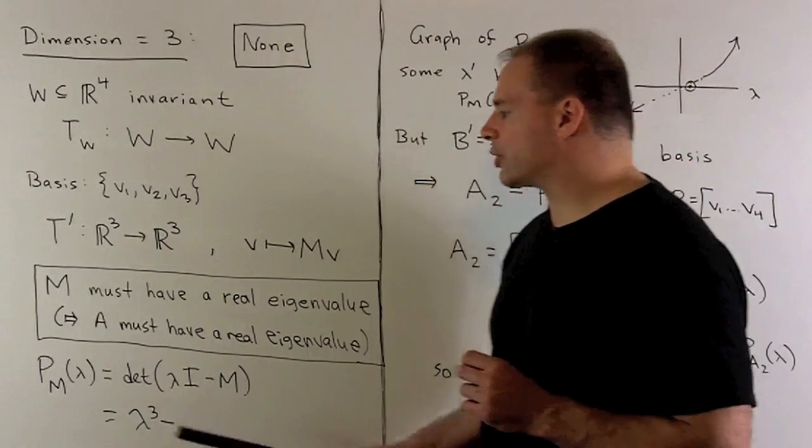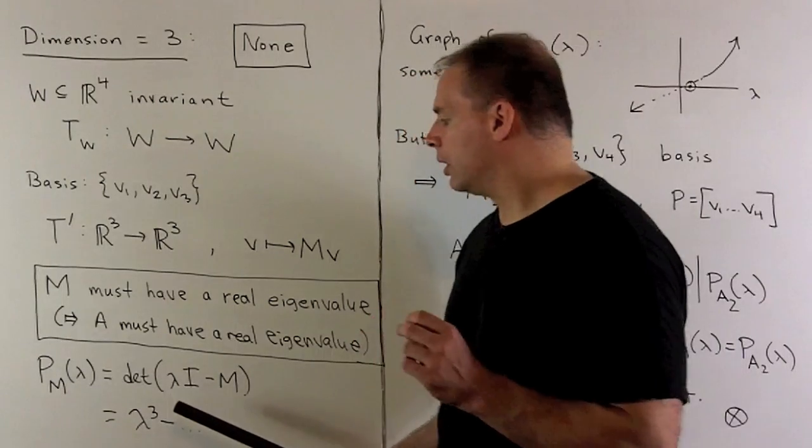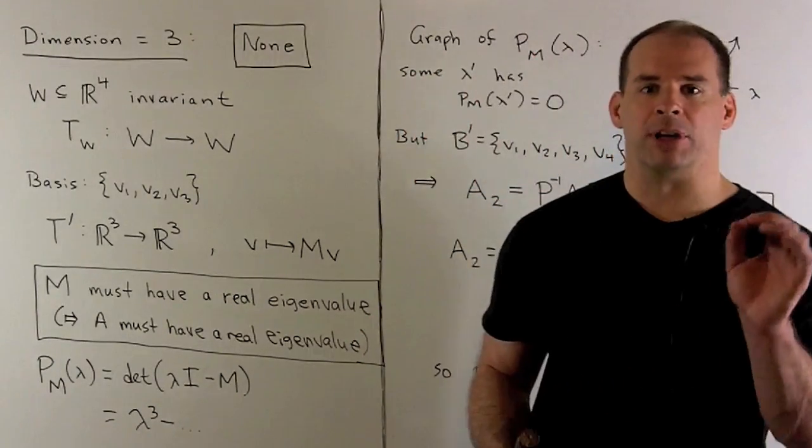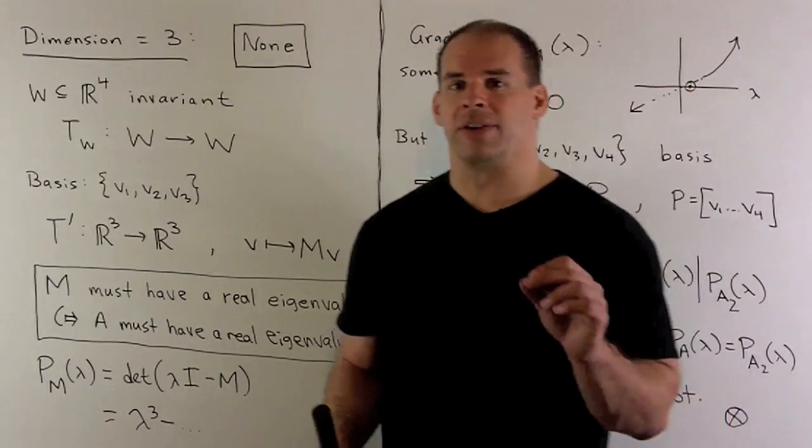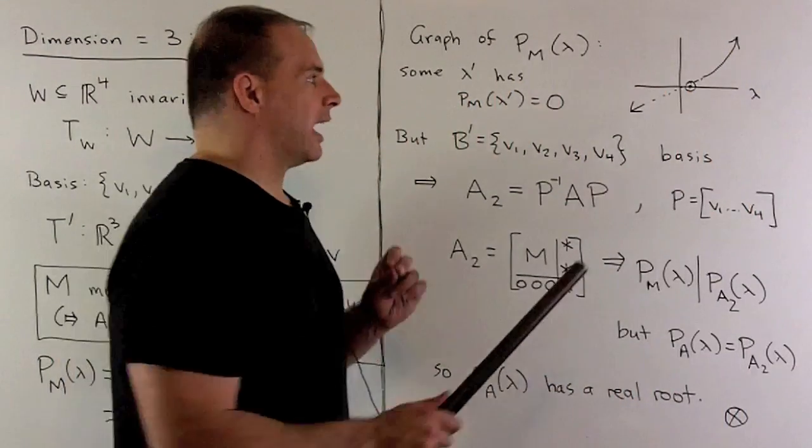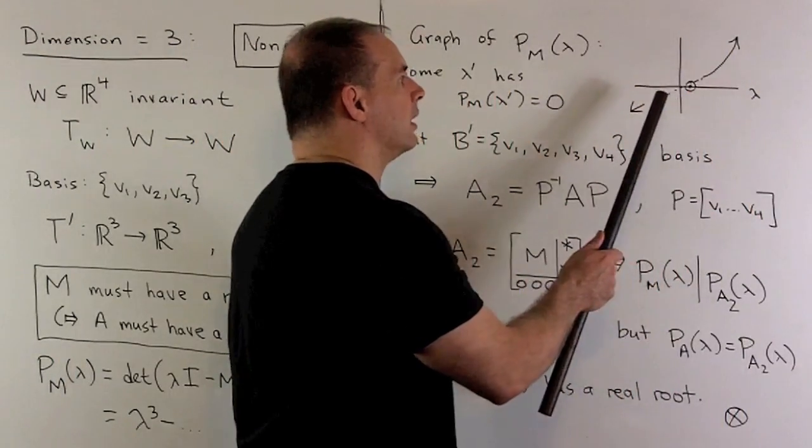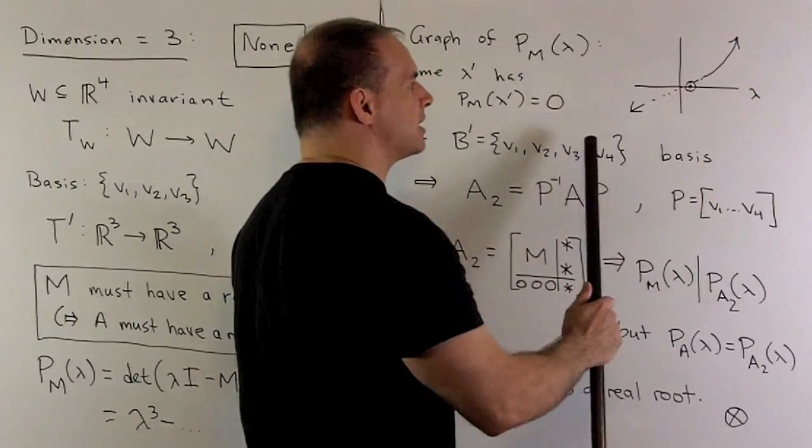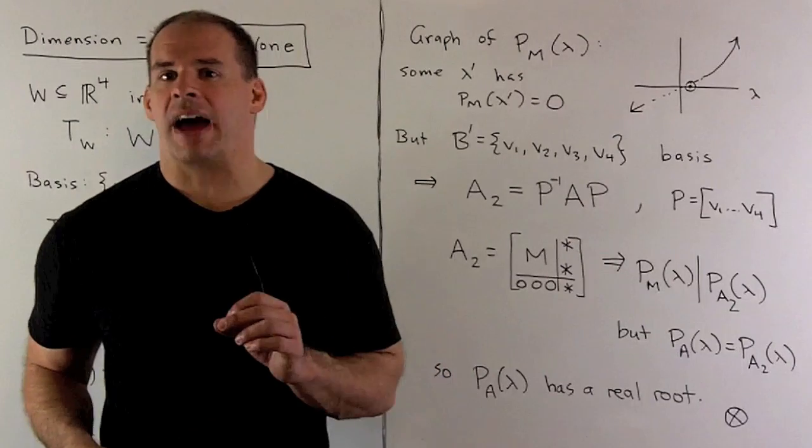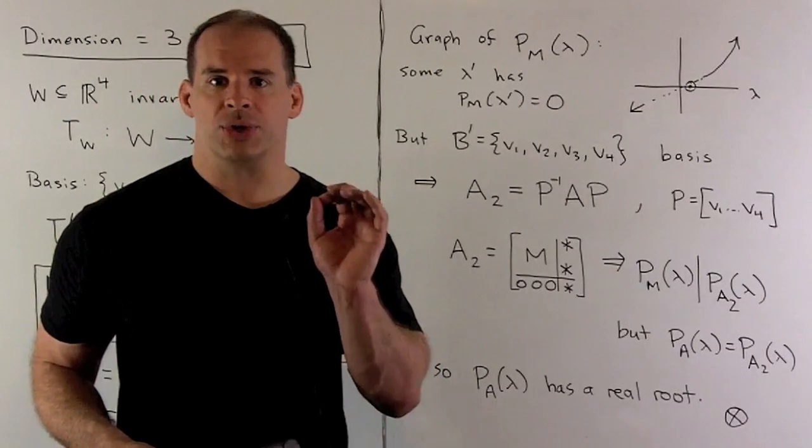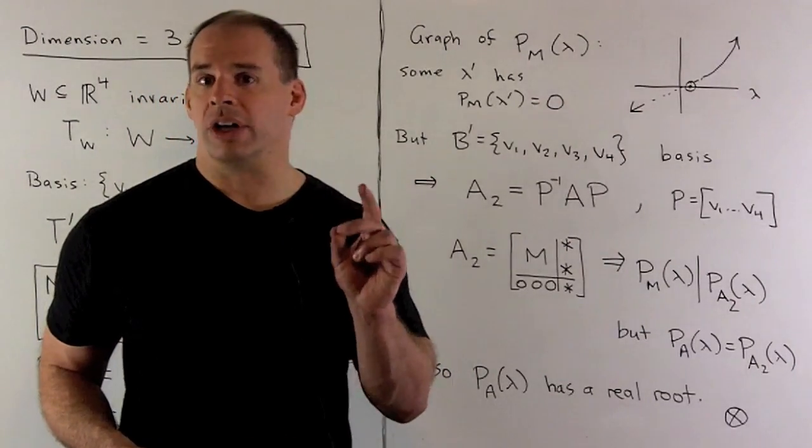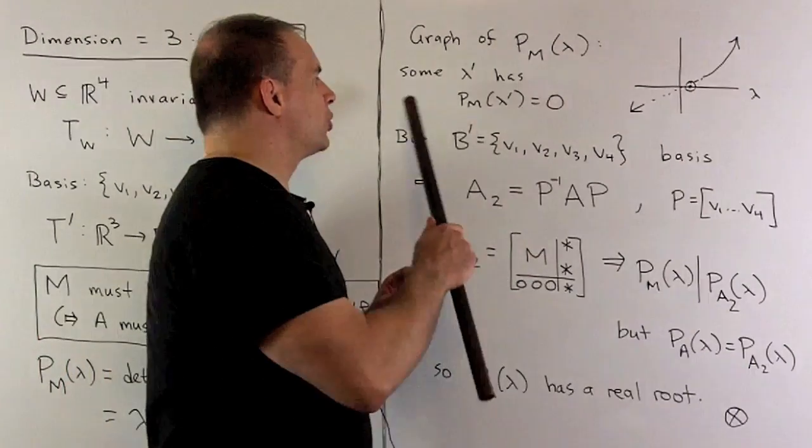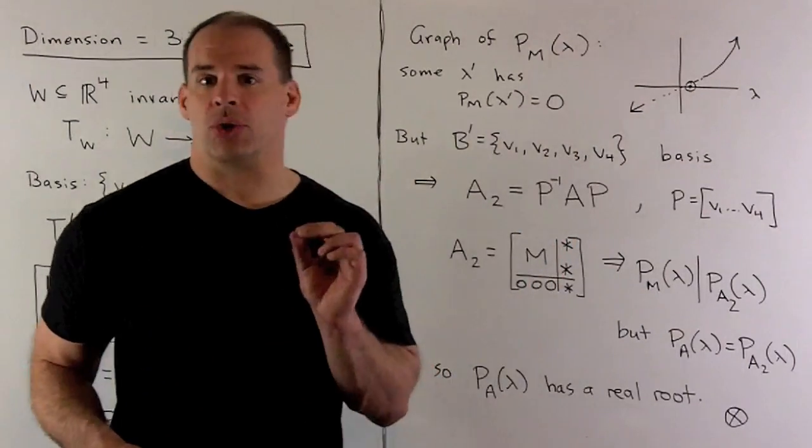Now, if we compute the characteristic polynomial of M, well, we don't know what it is, but we do know that the lead term is going to be lambda cubed. By considering the end behavior, as lambda goes off to the right, P_M is going to go to plus infinity. If we go to the left, it goes to minus infinity. The intermediate value theorem says we're going to have a zero somewhere. So, M has at least one real zero.